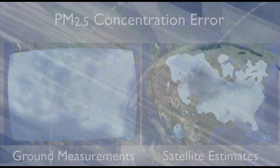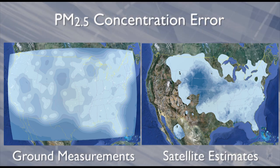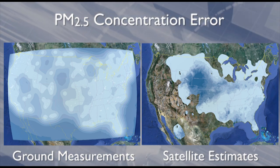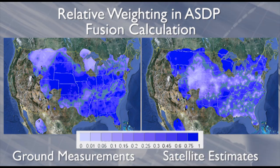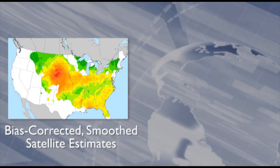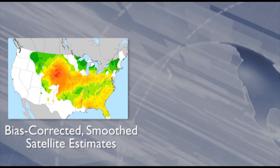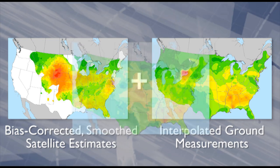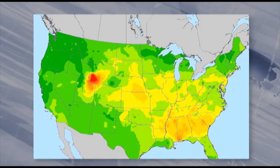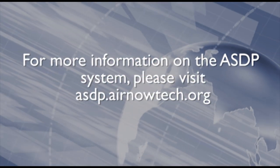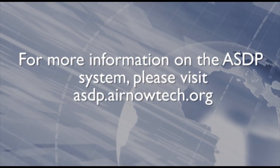However, reliable estimates of error, in both satellite estimates and ground measurements, also allow the ASDP to determine how heavily to weight the satellite estimates relative to ground measurements. The ASDP fuses the bias-corrected smooth satellite estimates of PM2.5 concentrations with ground measurements to yield a more spatially complete estimate of PM2.5 concentrations nationwide. For more information on the ASDP system, please visit asdp.airnautech.org.